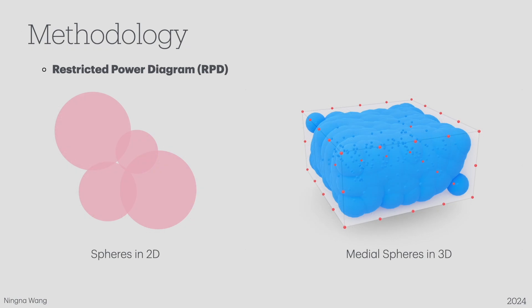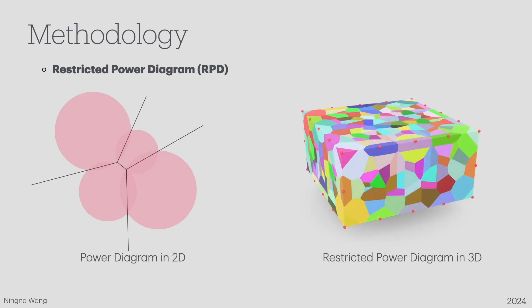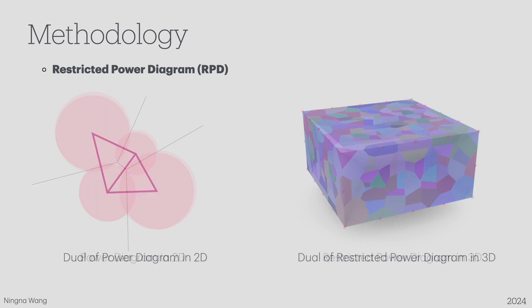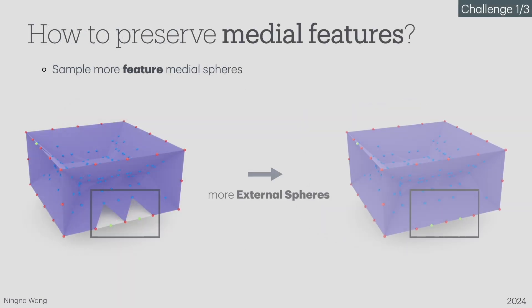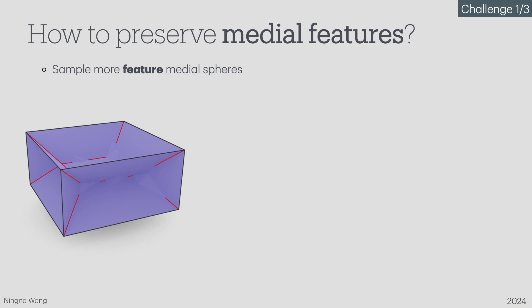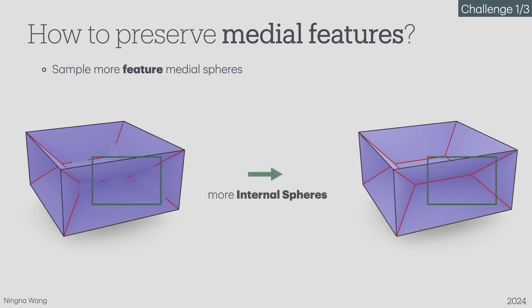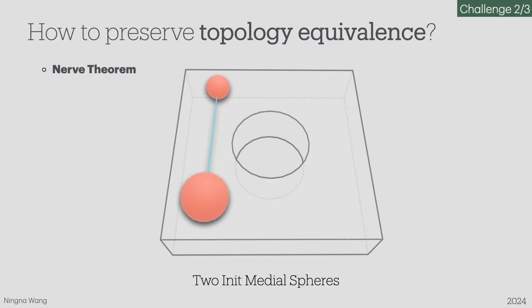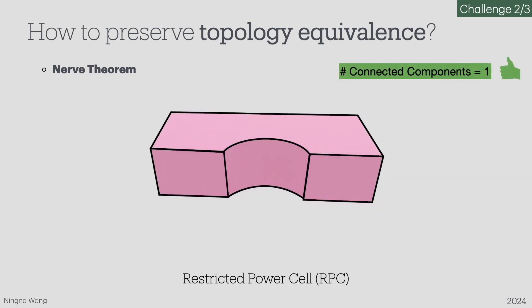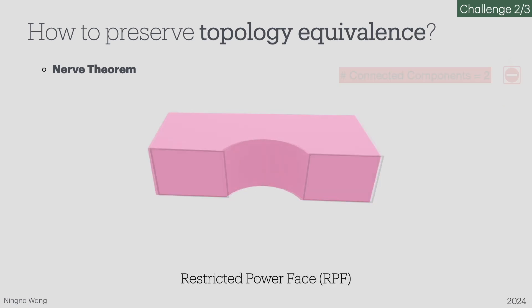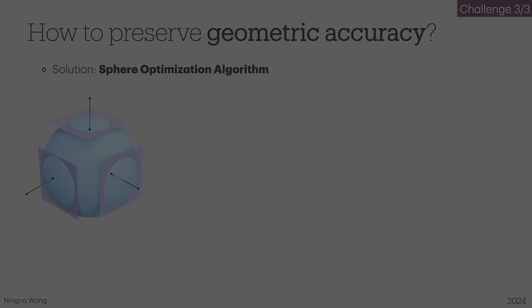My research addresses these challenges using the restricted power diagram, RPD. For topology, the RPD provides a natural decomposition of the shape based on the medial spheres, and the dual of the RPD provides connectivity. The intuition of preserving medial features is to sample as many medial spheres as needed. To preserve external features, we sample more zero-radius medial spheres near sharp edges. For internal features, we detect areas where internal feature spheres are lacking and sample more accordingly. For topology preservation, according to the Nerve theorem, for any shape with no cavity, we test two topological indicators for each restricted element of the RPD — the number of connected components and the Euler characteristic — expecting both to equal 1. If the test fails, we apply refinement by adding new medial spheres in the local region.